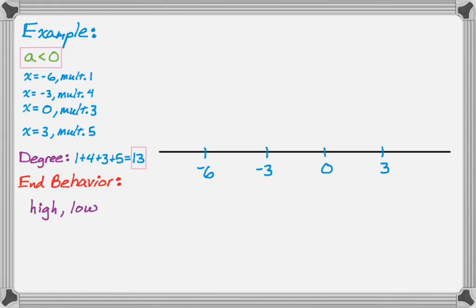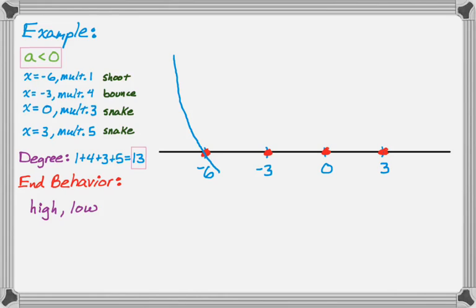Setting up the x-axis again and looking at multiplicity: multiplicity 1 at negative 6 shoots straight through; multiplicity 4 at negative 3 bounces; multiplicity 3 at 0 snakes through; multiplicity 5 at 3 snakes through, but gets flatter than at 0. Starting high, I shoot straight through at negative 6, then go down toward negative 3 where it bounces — turns around and goes back up.